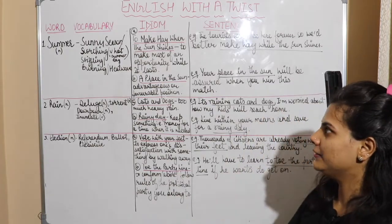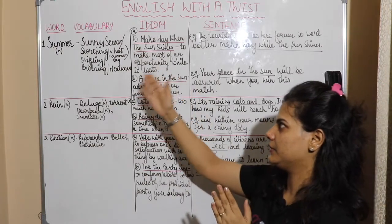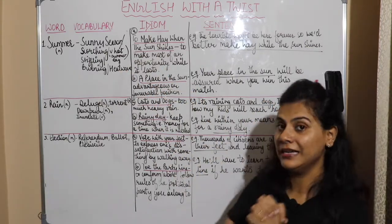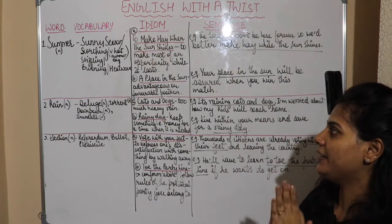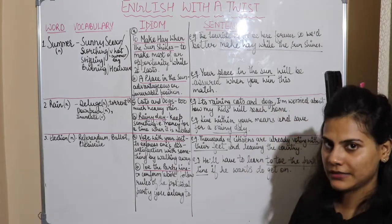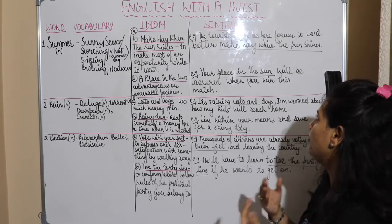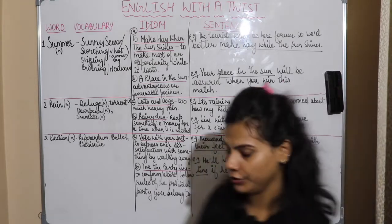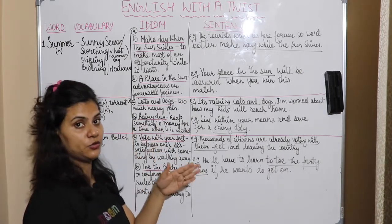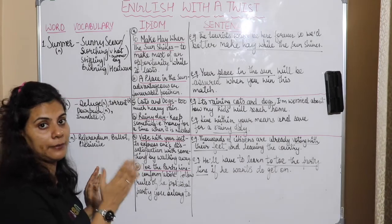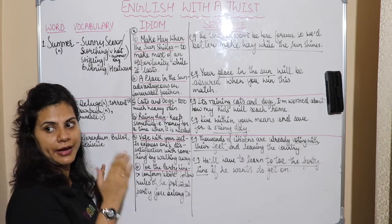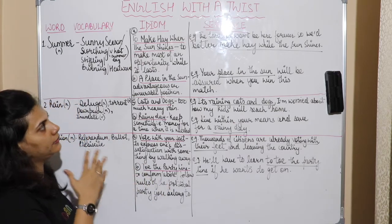Another idiom we can associate with summer is 'a place in the sun,' meaning an advantageous or favorable position. You can use it in a sentence like: 'Your place in the sun will be assured when you win this match' — meaning you will be in a profitable, advantageous situation and gain benefits when you win the match. This is another idiom associated with summer or the season.